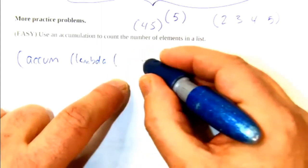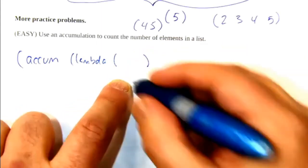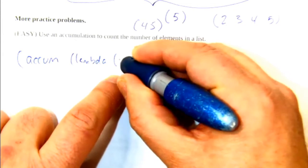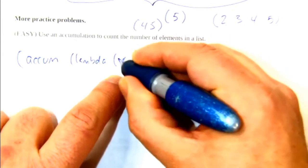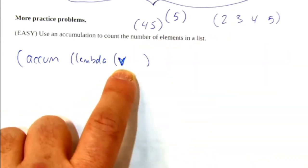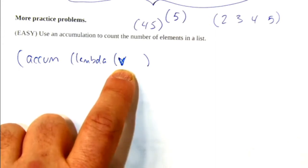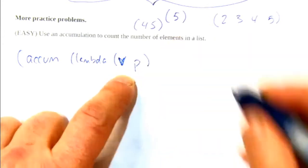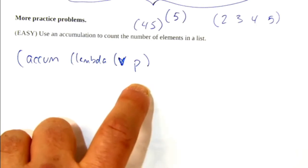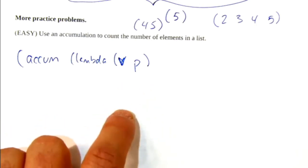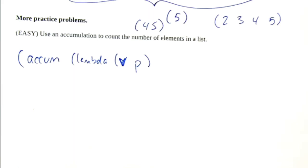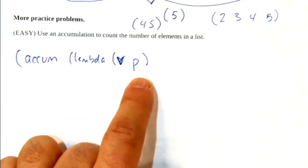Now remember, it's always a lambda of two things. It's a lambda that's going to operate on the current value. And then I'm going to use p as the other parameter. p is the result of the prior accumulation. So all the work that's been done up until this point